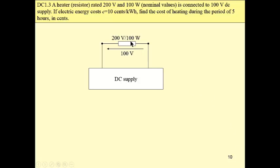A heater rated 200V and 100W. These are nominal values. It is connected to 100V DC supply. So this DC supply is half of the nominal rated voltage. If energy costs 10 cents per kilowatt hour, the task is to find the cost of heating during the period of 5 hours.